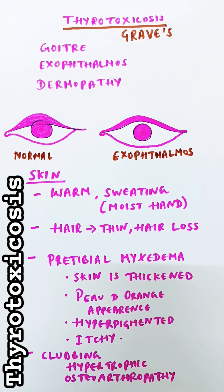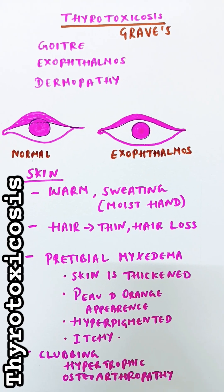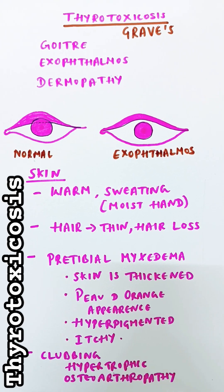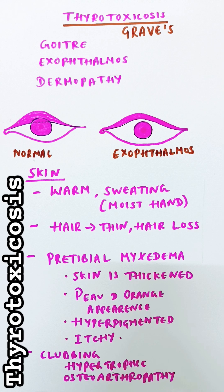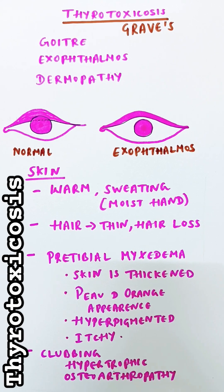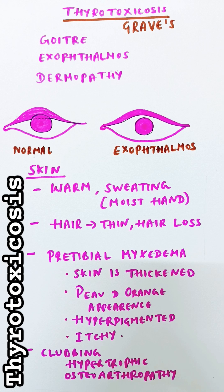Thyrotoxicosis is a clinical condition where there is excessive production of thyroid hormone. The most common cause is Graves disease. The patient has goiter, exophthalmos, and dermopathy.